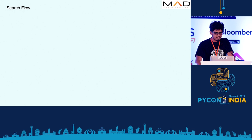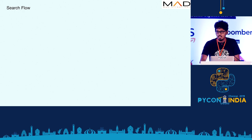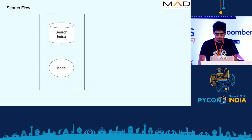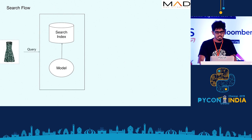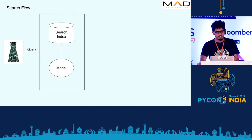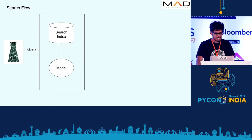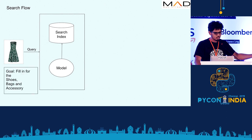The search engine itself consists of two components. One is the model, which obviously is the probabilistic graphical model, and the search index as well, where the documents will be stored. We get queries in the form of images. In this case, we have a dress, and our goal is to find shoes, bags, and accessories.